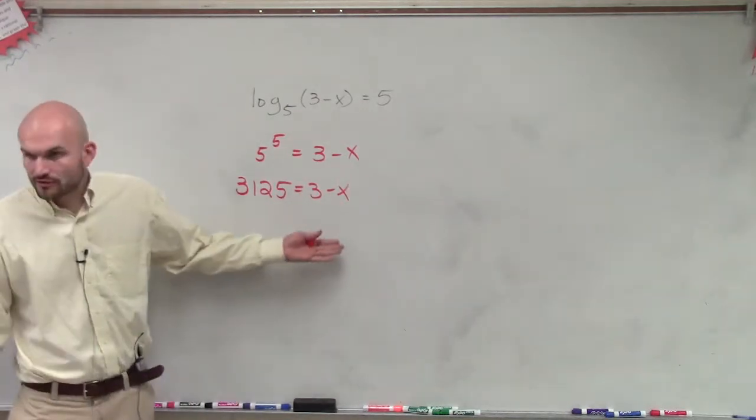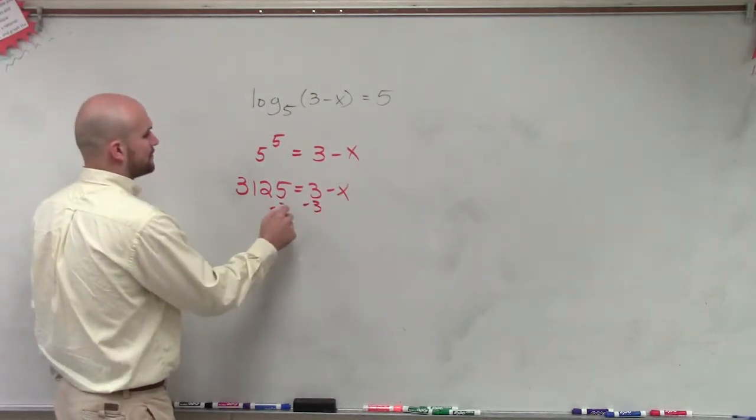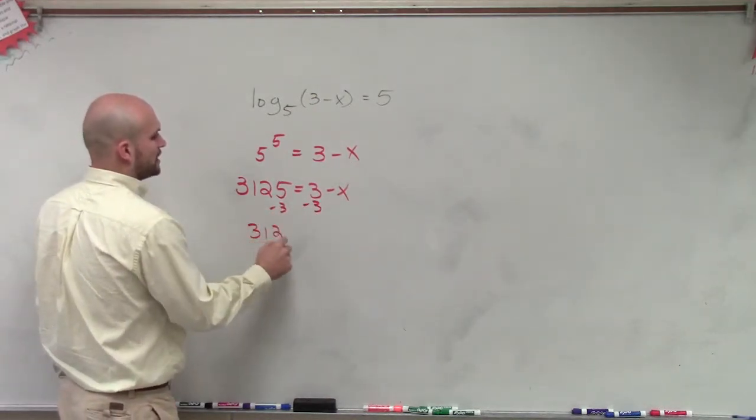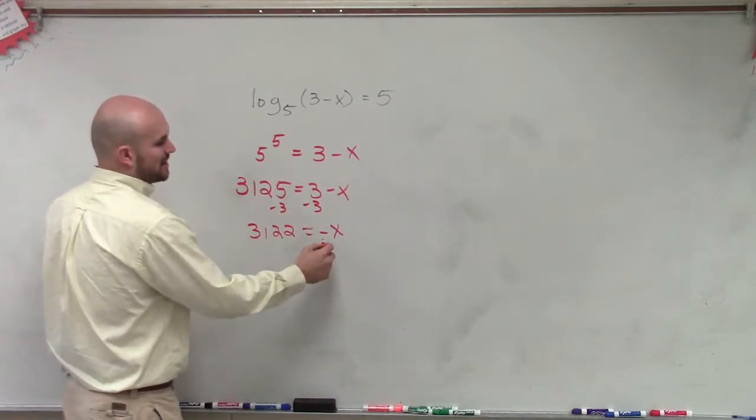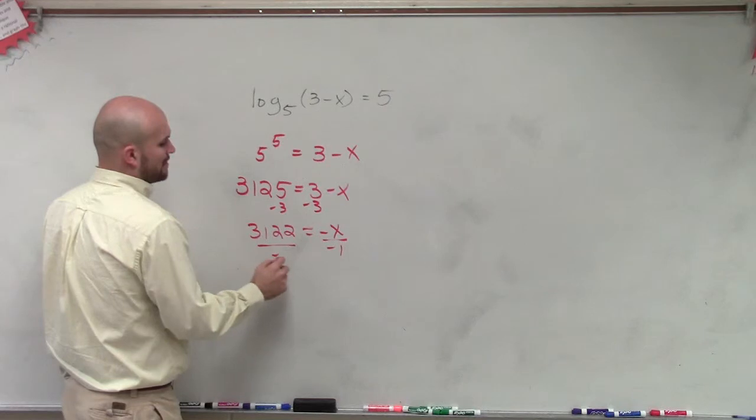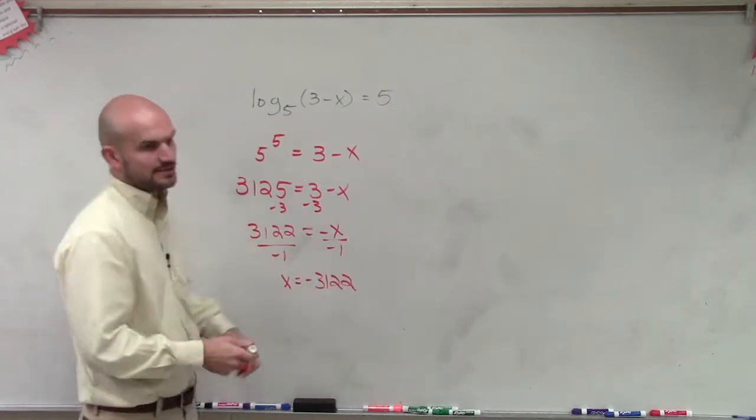Now we just need to solve for x. So there's a couple ways you could do it, but if you subtract by 3, you get 3,122 equals negative x. Remember, we always want to solve for a positive x though, so we divide by negative 1. Therefore, x equals negative 3,122.